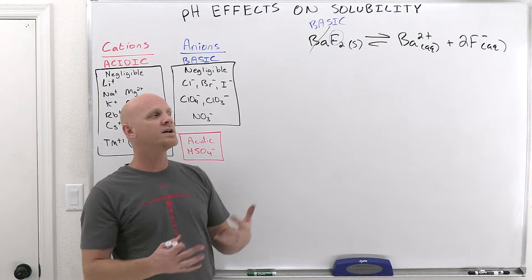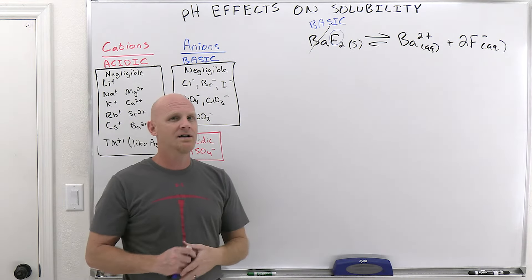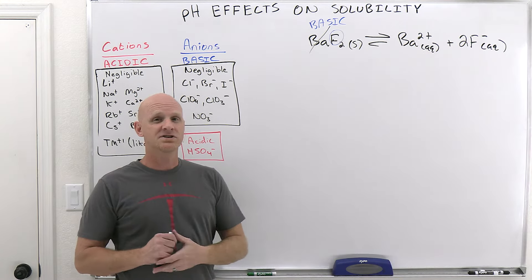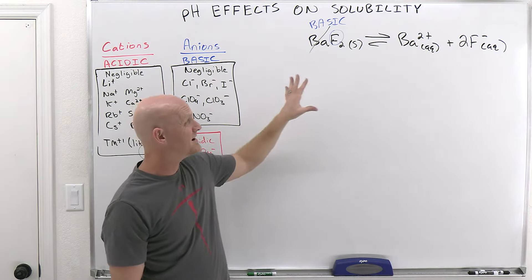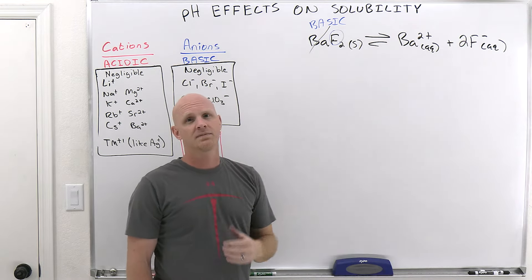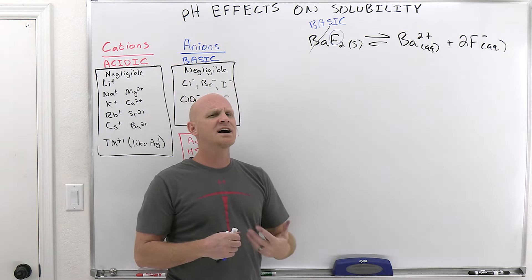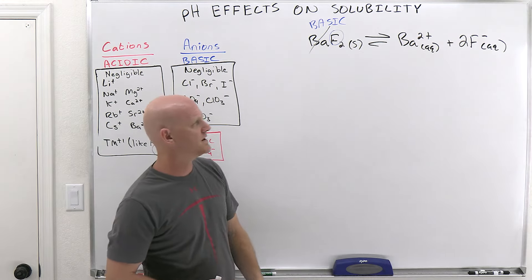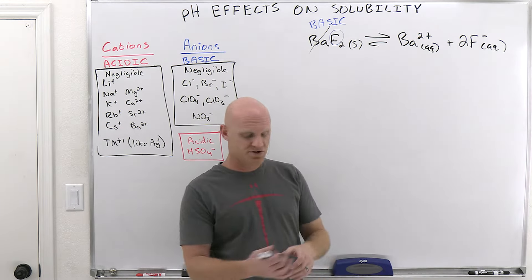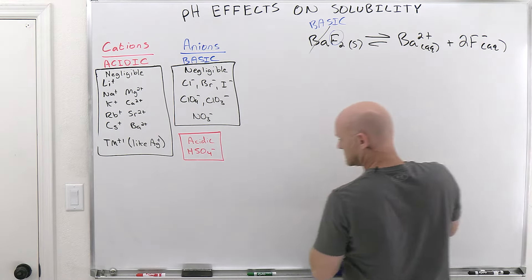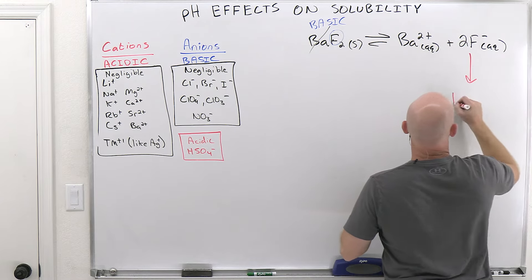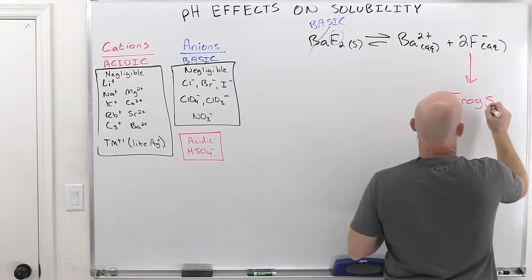Well, what if I want to do the opposite? What if I want to increase the solubility here? Let's just take a fictitious situation. Let's say I've got a barium fluoride solution that's saturated at equilibrium, and in that solution, let's say I have a magic formula that I say, and it turns all of the fluoride ions into frogs. Let's do that in red here. So it converts all fluoride ions into frogs.